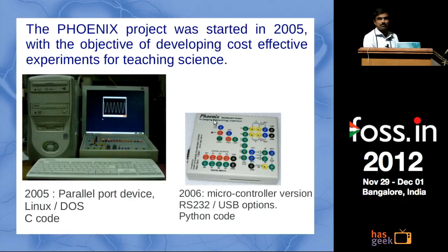This is a bit of the history of this project. We started somewhere in 2005. It is called the Phoenix project - physics with homemade equipment and new innovative experiments. That time the parallel port was there, so we had a big box controlled by a Linux device driver and code was written in C.